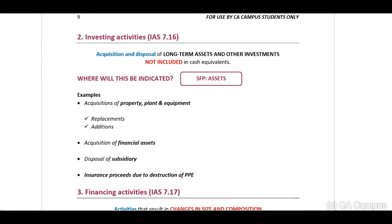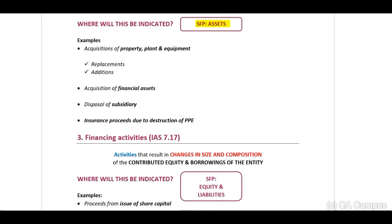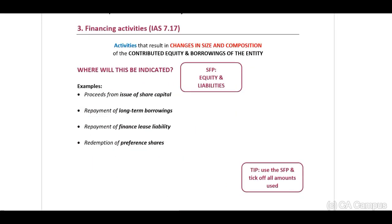The second category is investing activities, which relates to the assets section of your statement of financial position - acquisitions and disposals of long-term assets and other investments not included in cash equivalents. Financing activities are activities that result in changes in the size and composition of contributed equity and borrowings of the entity - equity and liabilities movement.